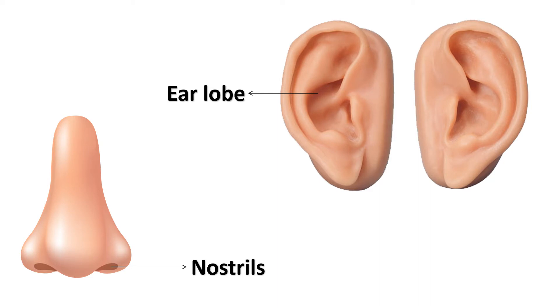Holes in our nose are called nostrils. The outer part of the ear is called the earlobe.